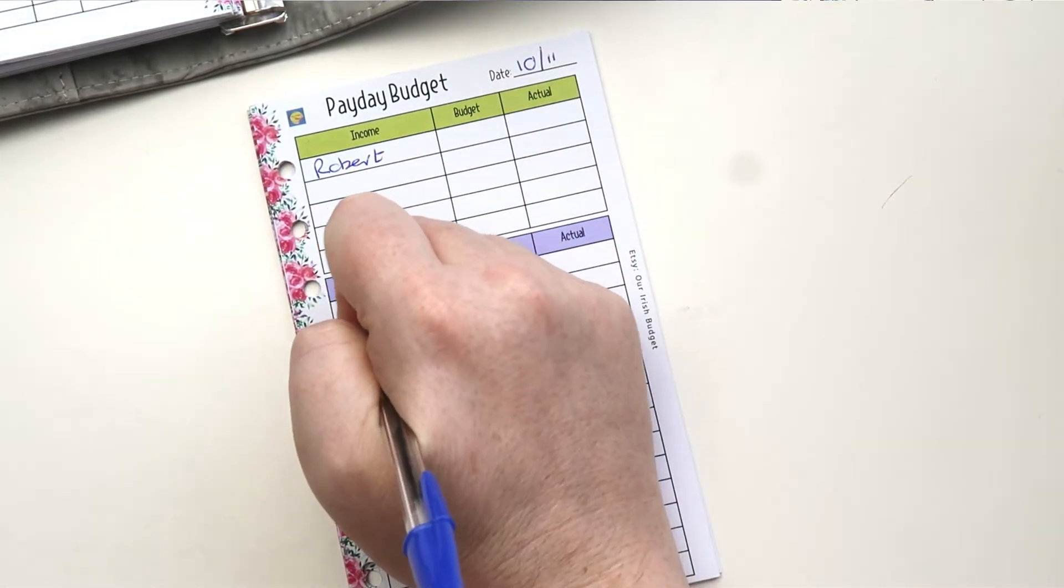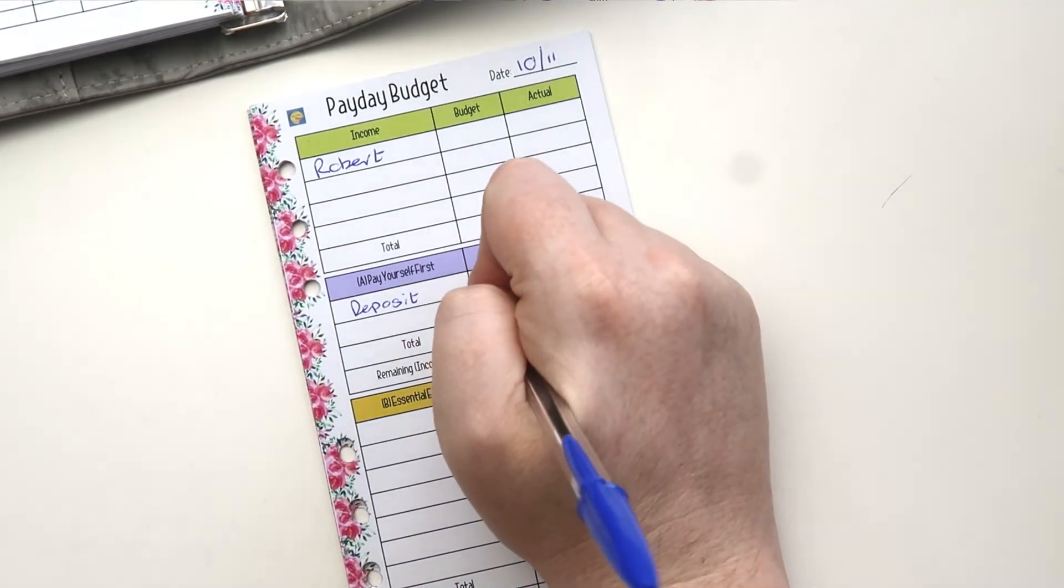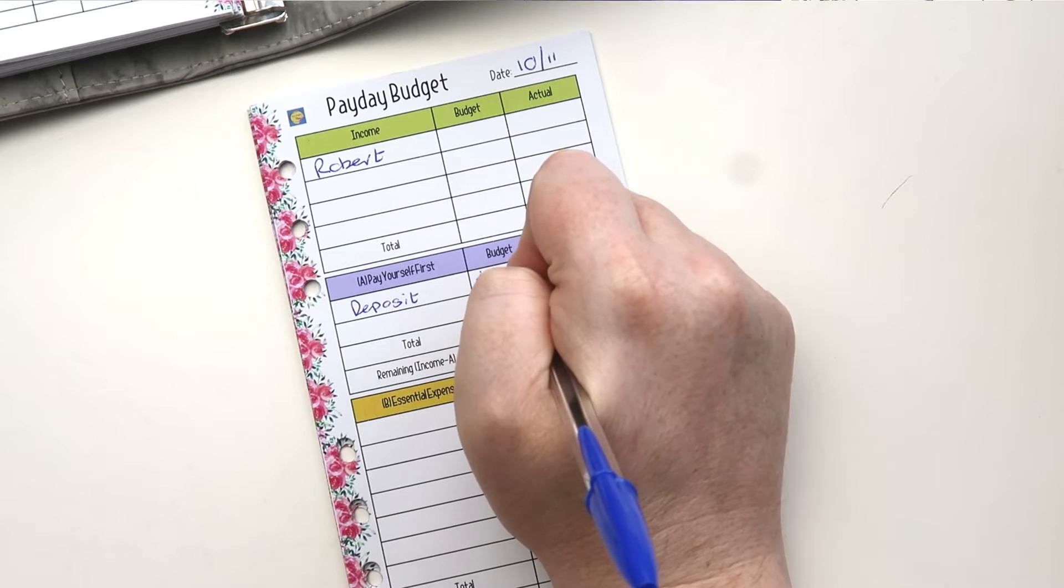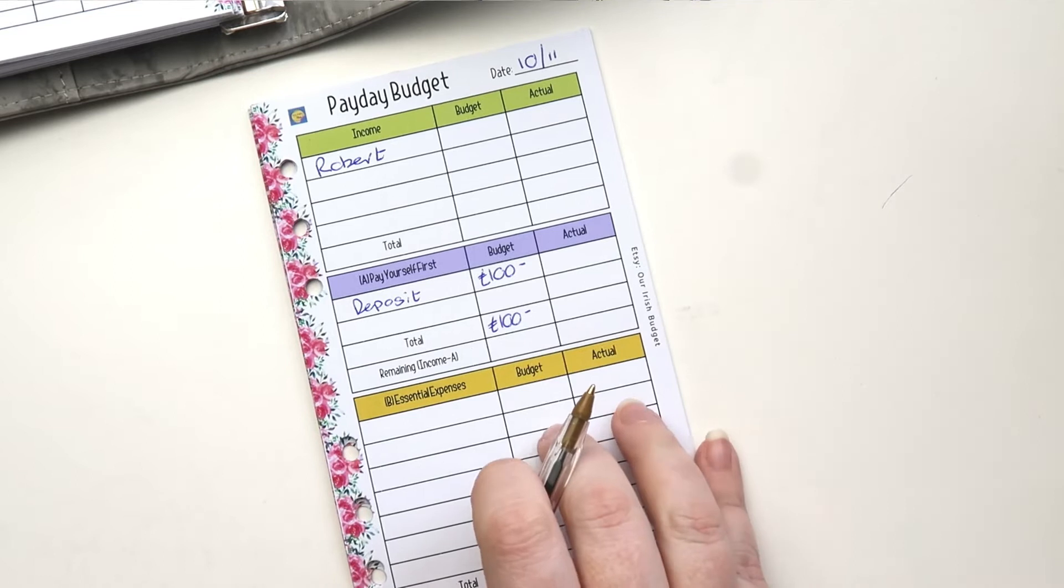For us, it is a house deposit. If you've been following us for a while, you've known we've been saving for a while for a house deposit. So a hundred euros this week is going to go towards the house deposit and that's all we plan to put into that area.